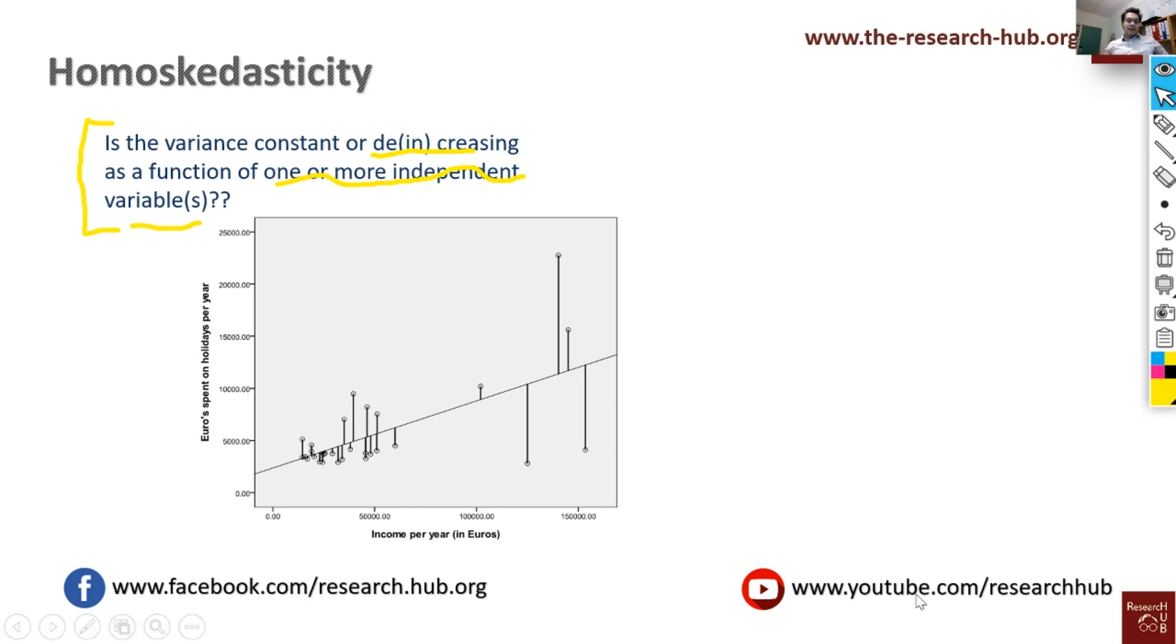In regression what we do is we estimate the regression line in such a way that the distance from the regression line and the data points - if we square them and sum it up - that is minimized. That's why we call it OLS, ordinary least squares regression.